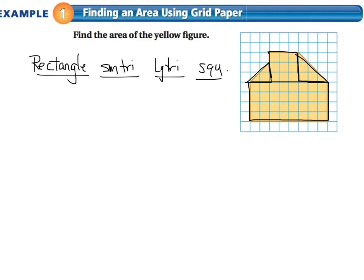Well, I know a rectangle is base times height. So the rectangle, 1, 2, 3, 4, 1, 2, 3, 4, 5, 6, 7, 8. So the area of the rectangle would be 8 multiplied by 4. And that would give me 32 units. The small triangle looks like I have a base of 2 and a height of 2. So one-half base times height. One-half of 2 times 2, which is 4. That means this one is going to be 2 units.